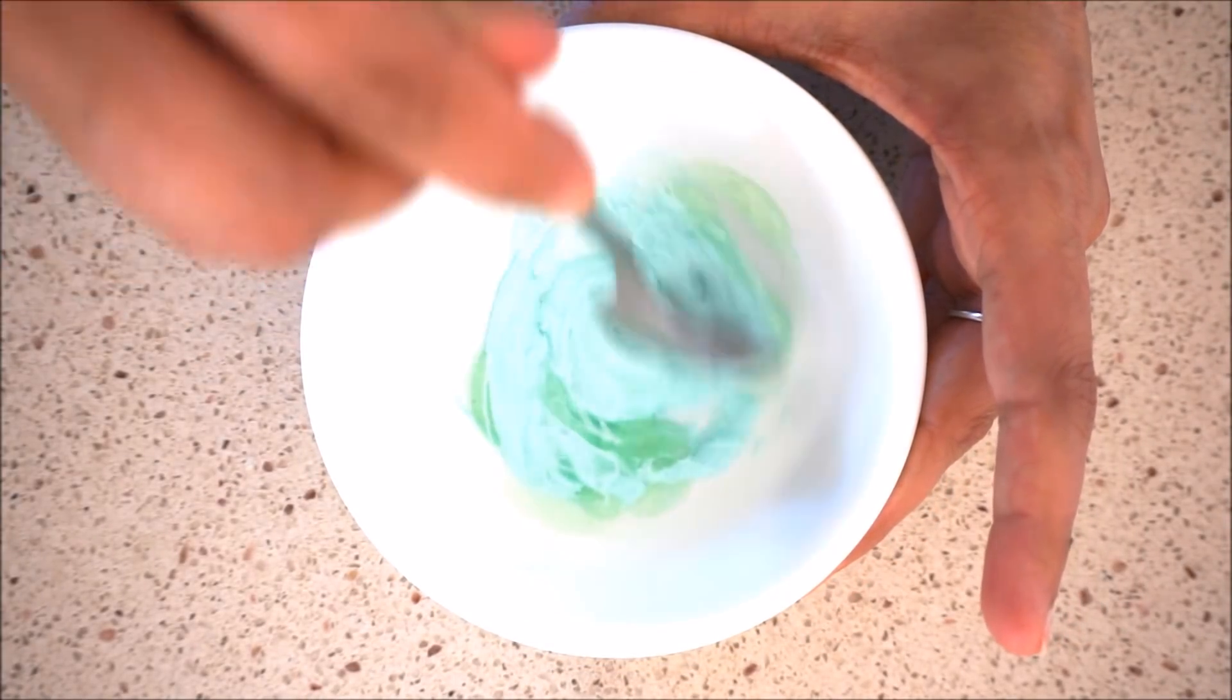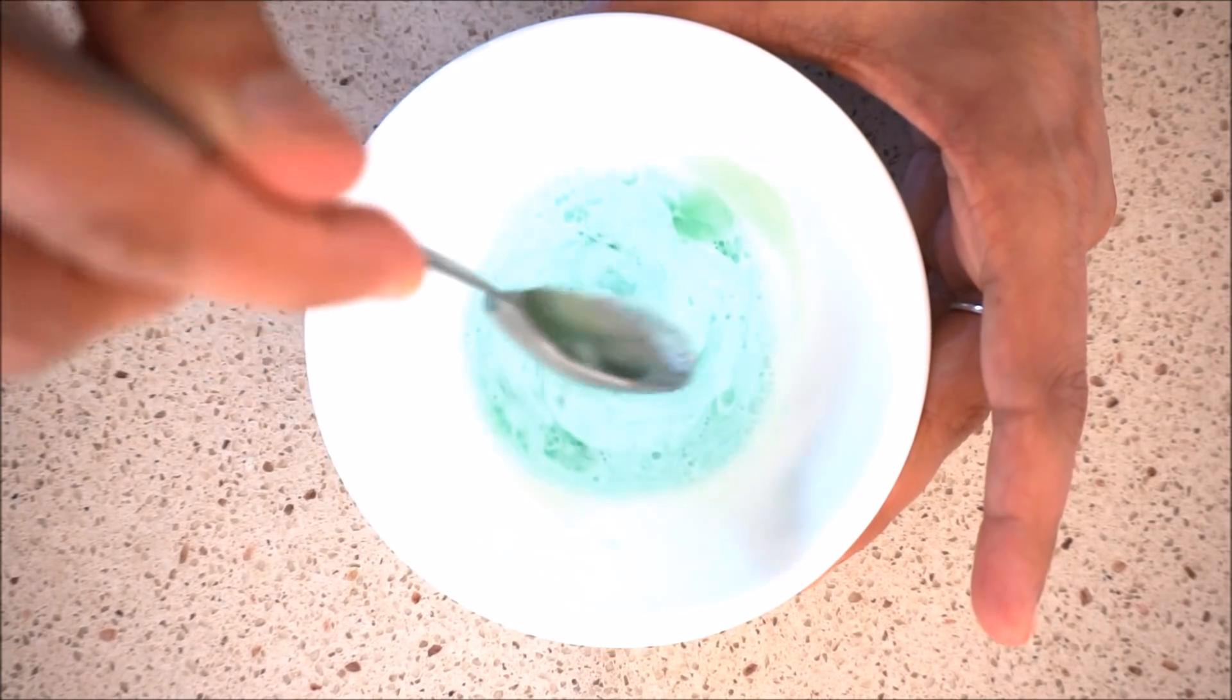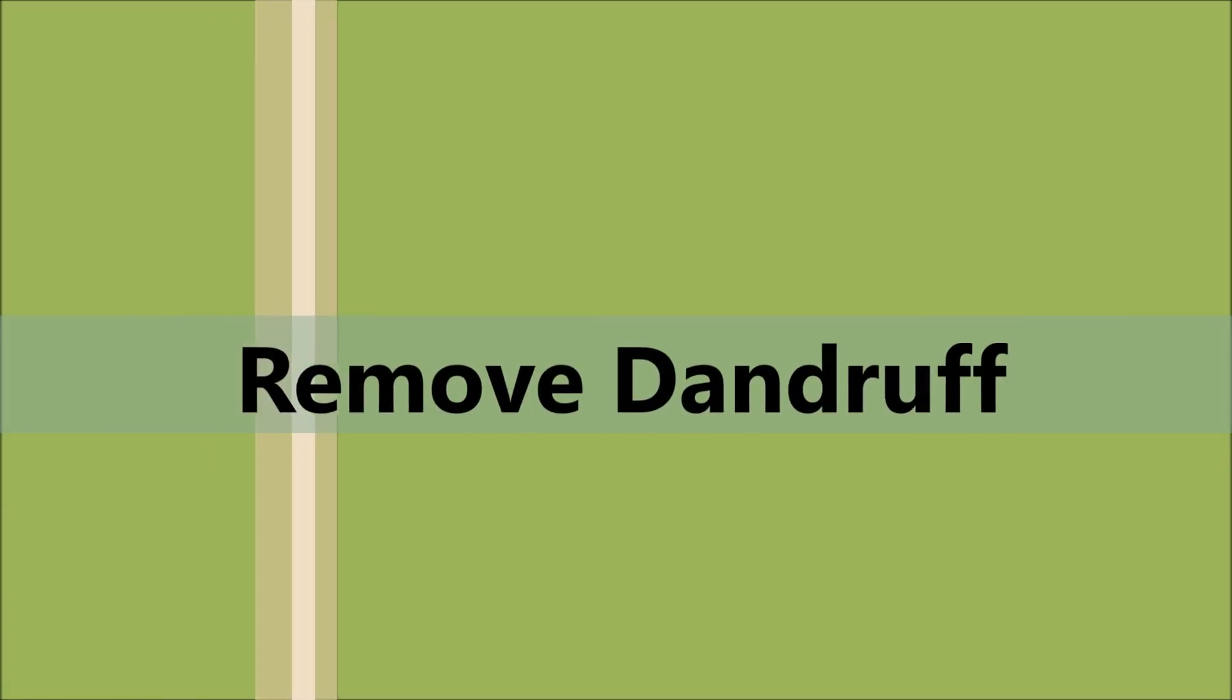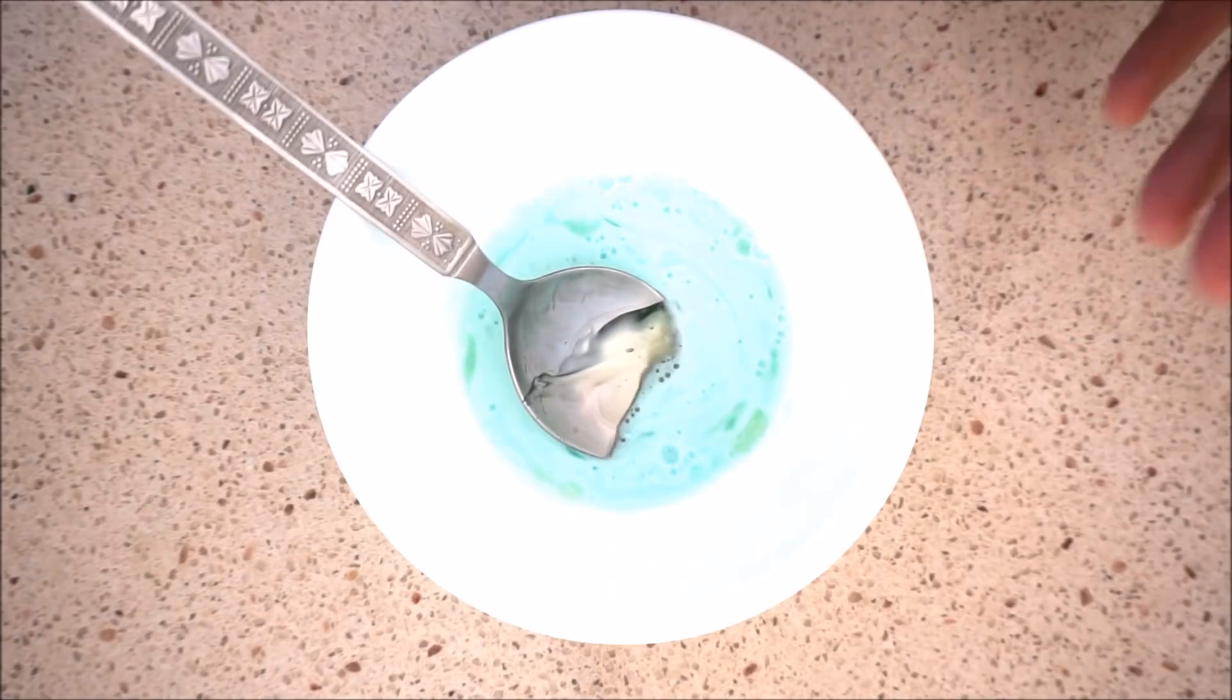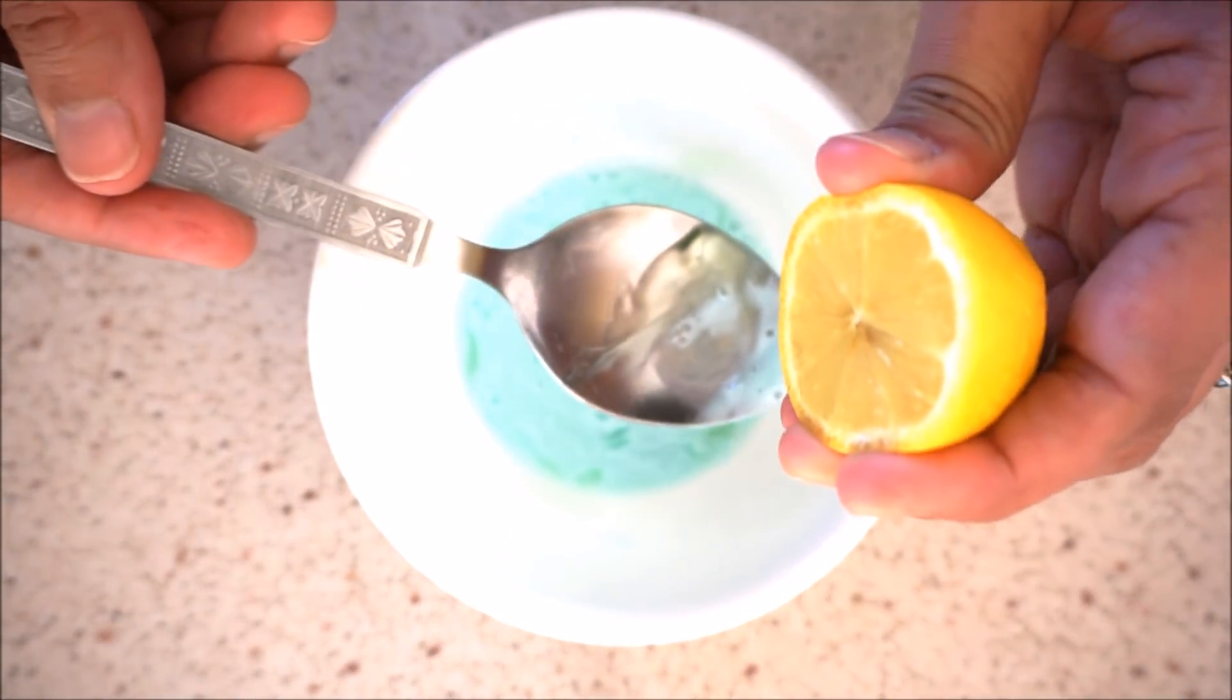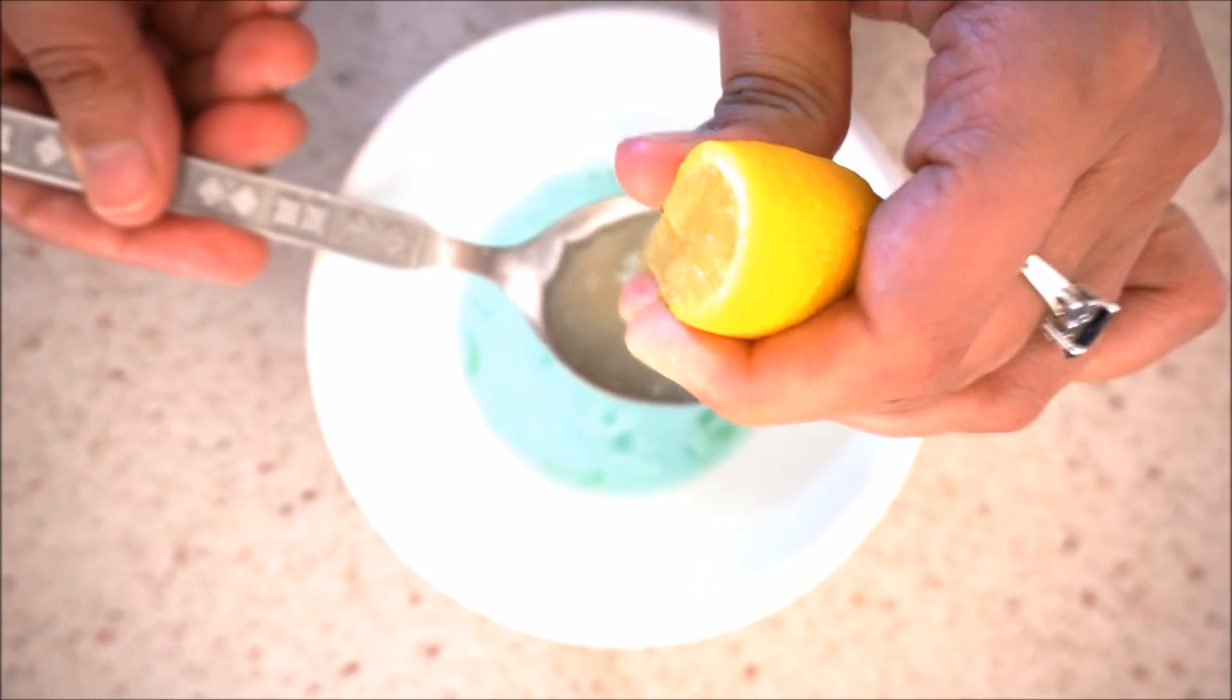Now if you want to remove dandruff from your hair, you can add lemon to this mixture. Never apply lemon directly to your hair. You need to mix it with other ingredients and then apply it. Take one teaspoon of lemon and mix it with your shampoo.